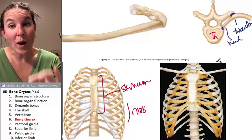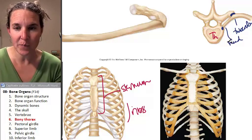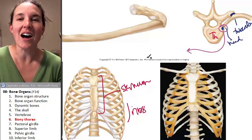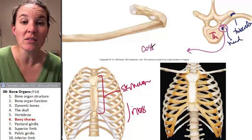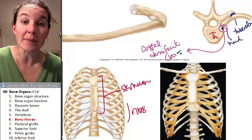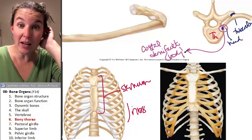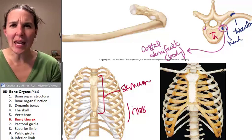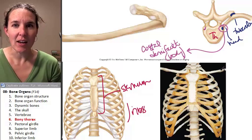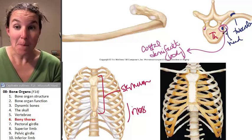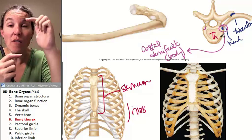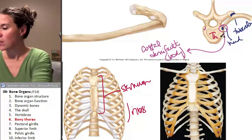The place on the vertebra where the articulation happens: the head of the rib articulates with the costal demifacet on the body of the thoracic vertebra. Why is it called a demifacet? Demi means half — it's half a facet. This makes complete sense because the head of the rib articulates with the costal demifacet of two thoracic vertebrae.